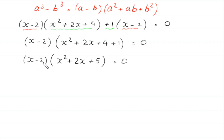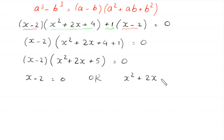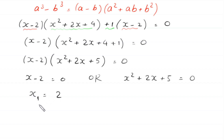From here, either x minus 2 is equal to 0, or this expression x squared plus 2x plus 5 is equal to 0. From the first equation, x is equal to 2. This is the first value of x, the first solution.